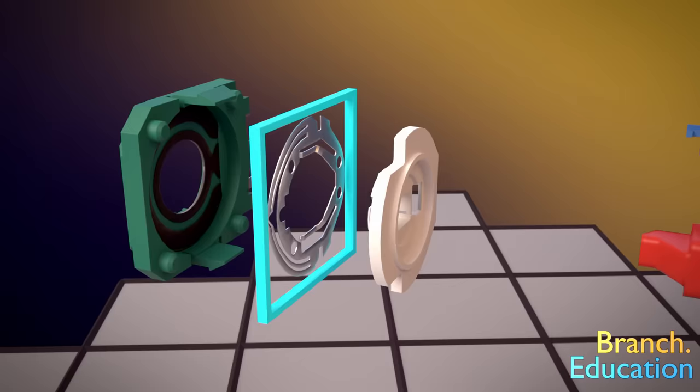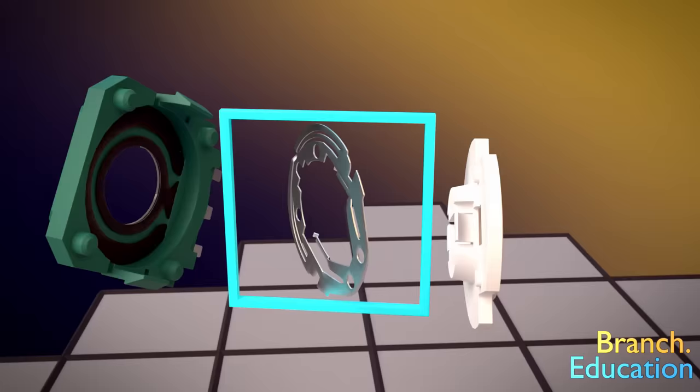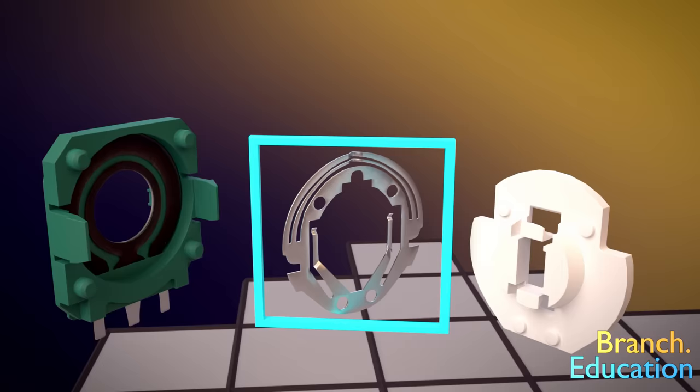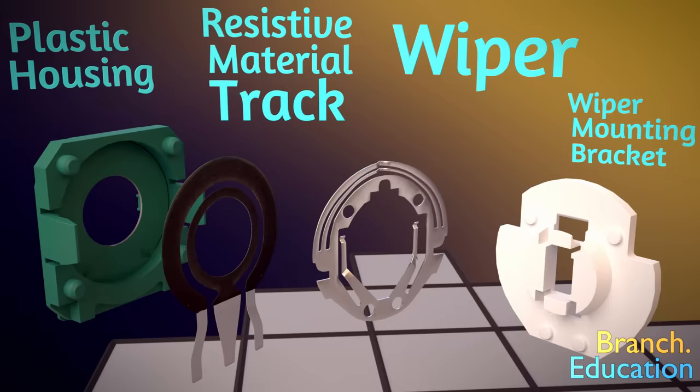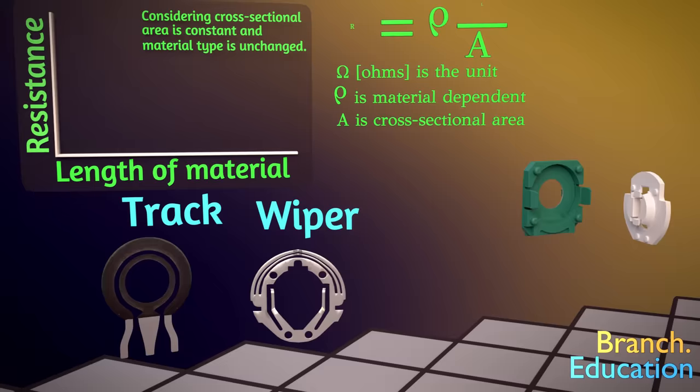Let's open one of the potentiometers to see how it works. Voila! Inside, we find the small metal piece we've been talking about and it's called a wiper. On this side, we have a plastic housing which contains electrically resistive material printed in a set of two circles on the inside, called a track.